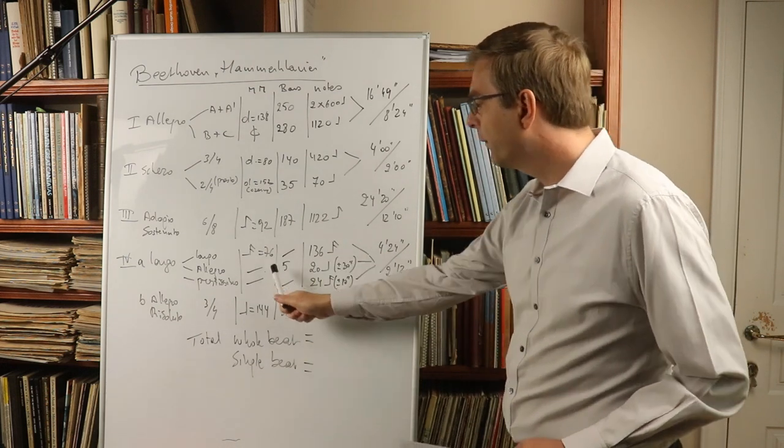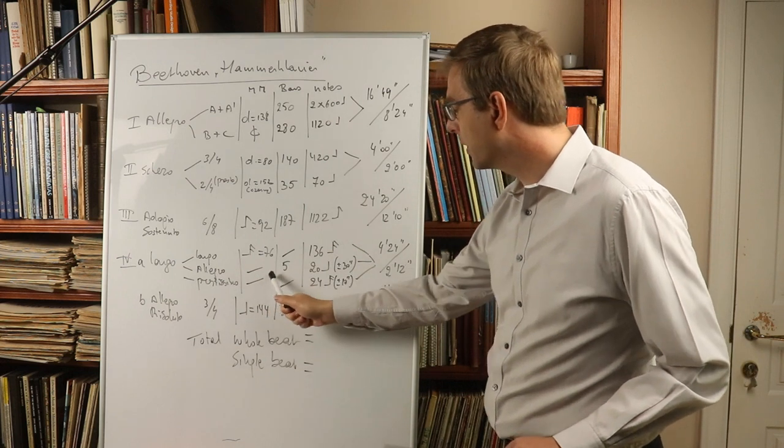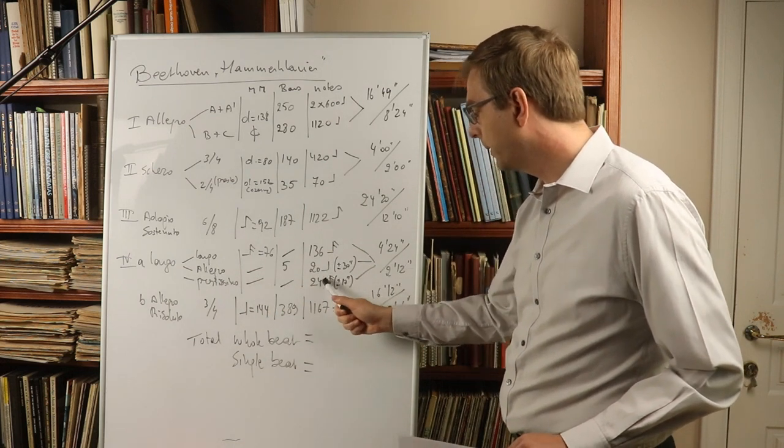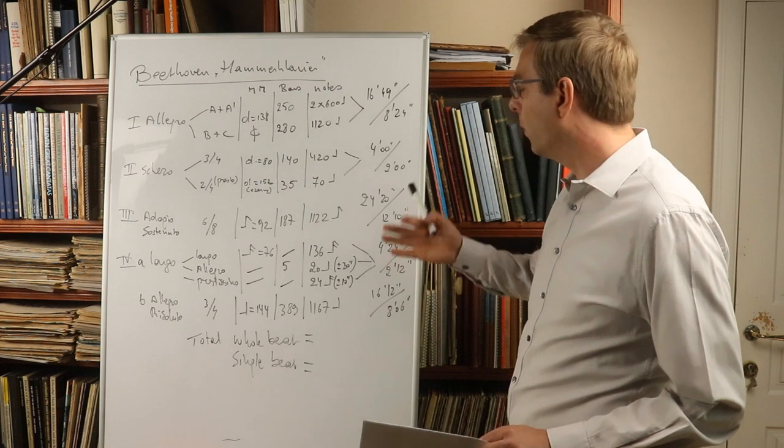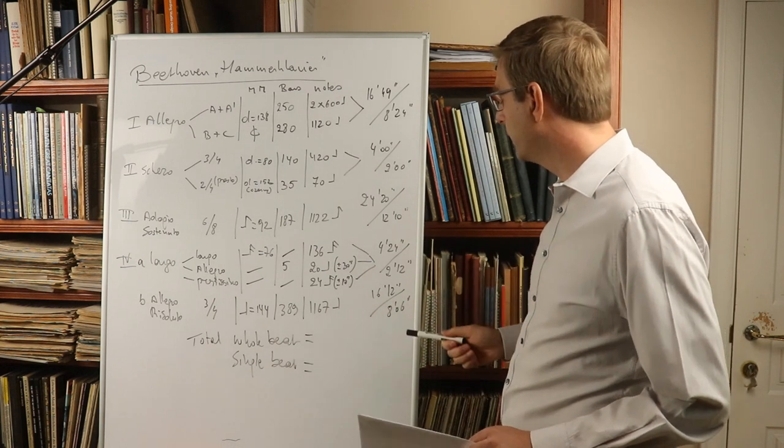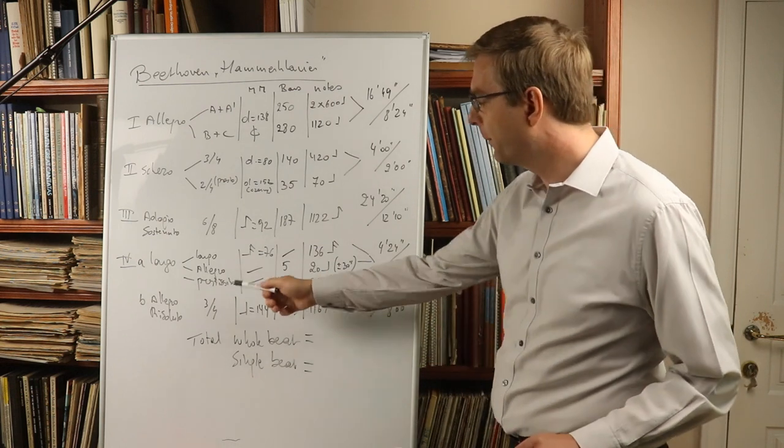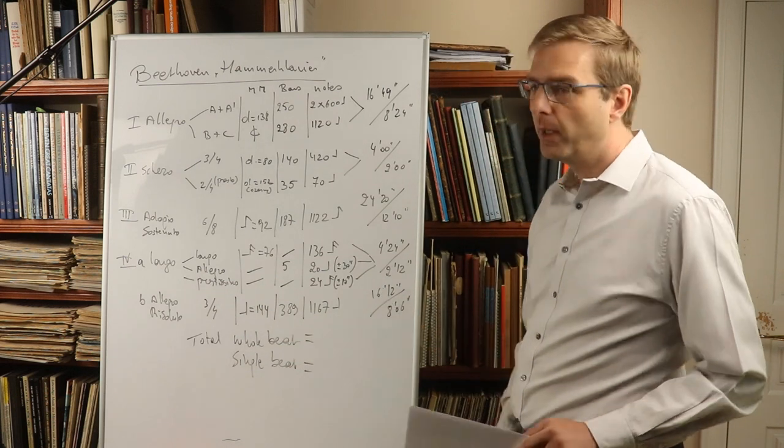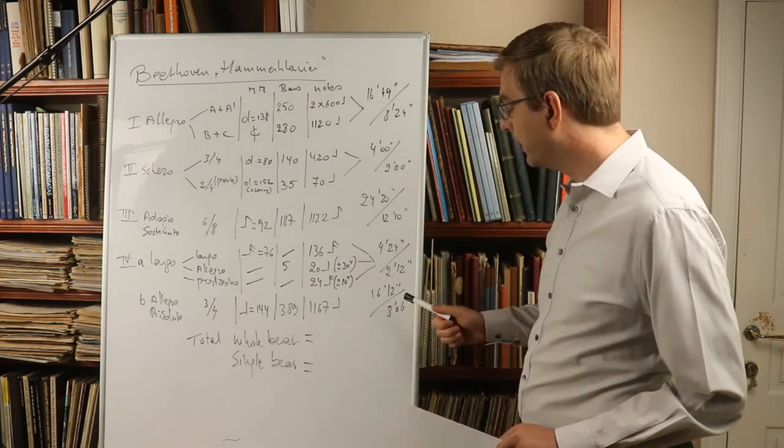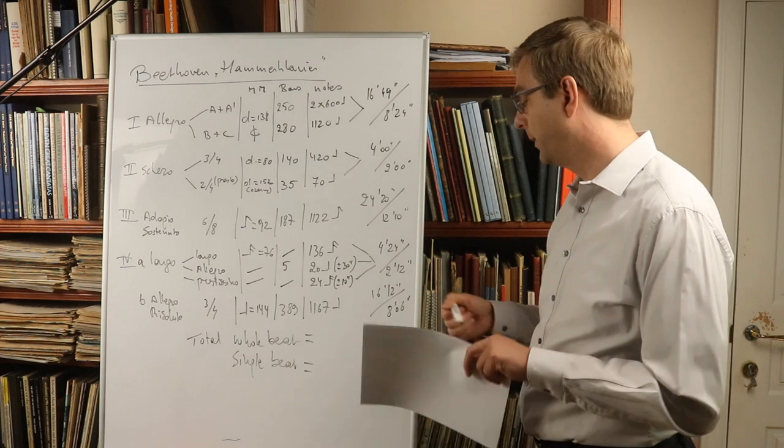Then you have the largo. There are a few bars here without metronome marks, but it's only 20 quarter notes, 24 16th notes. So on the whole it doesn't matter too much—it's 4 minutes, 2 minutes 12 seconds. And then the big fugue here lasts 16 minutes and a little bit in whole beat and 8 minutes in single beat.